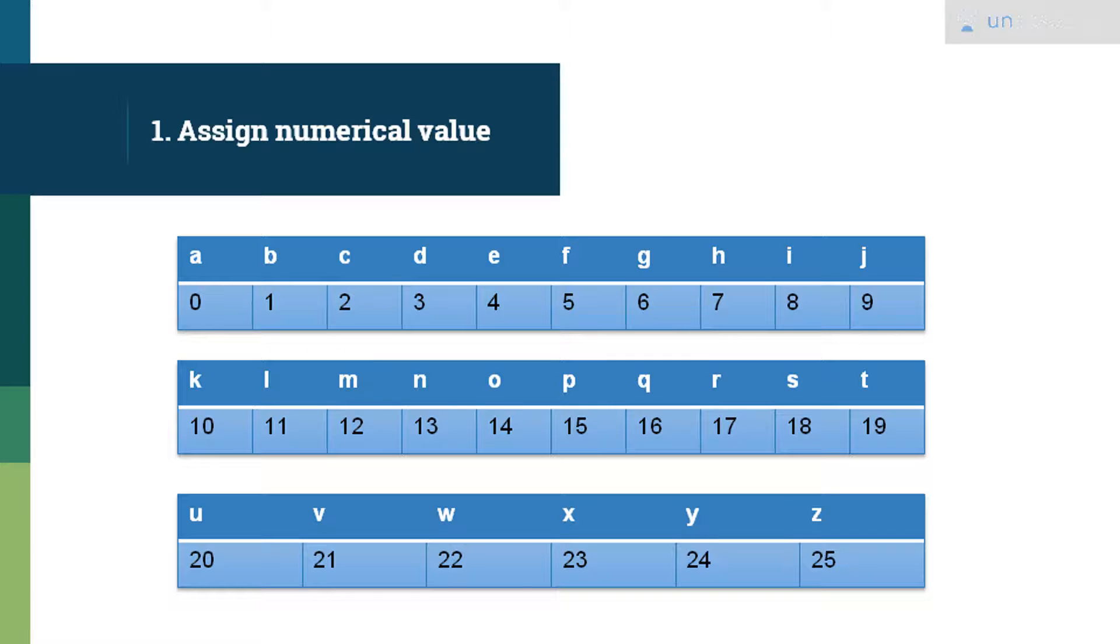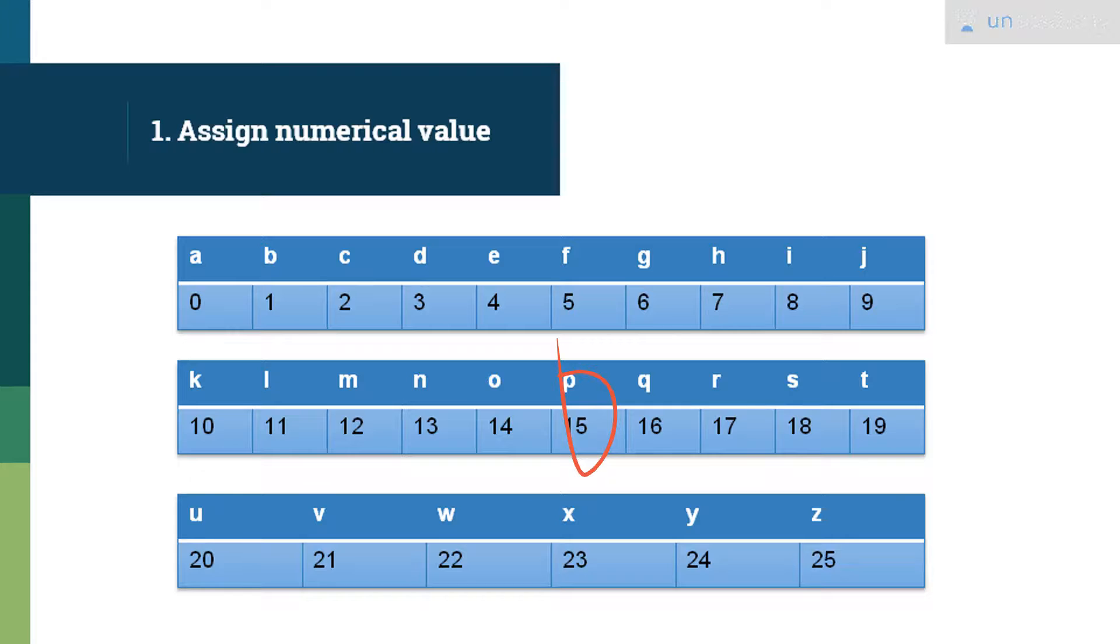And 15 stands for P. As you can check here, 15 is your P. Hence, P is your cipher text.